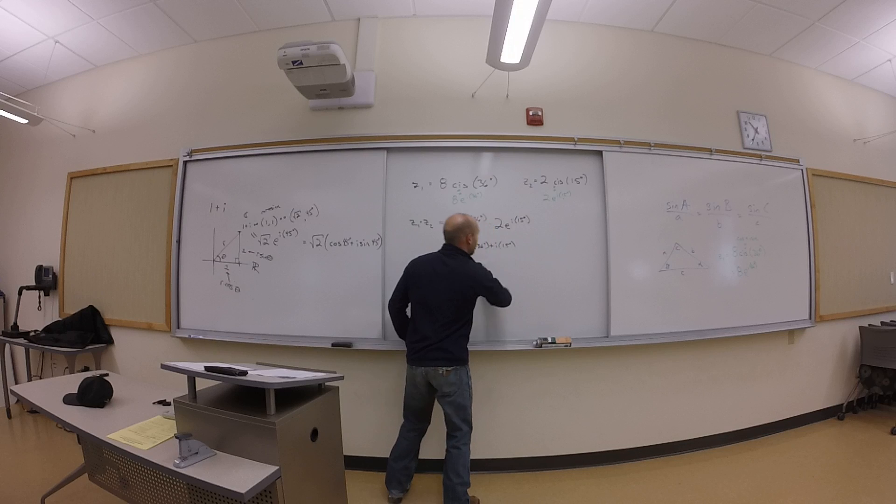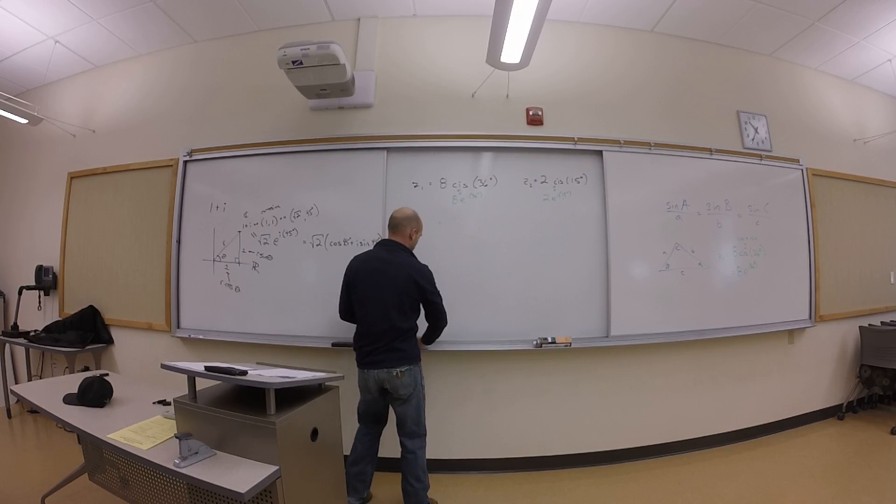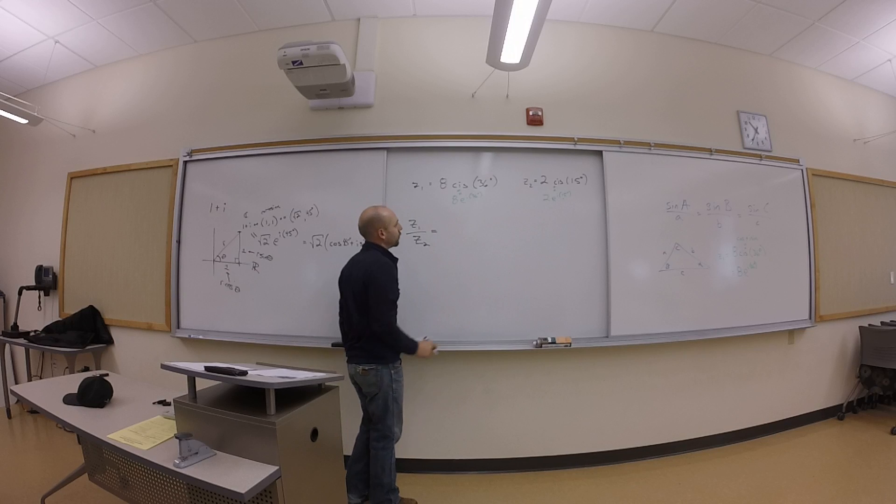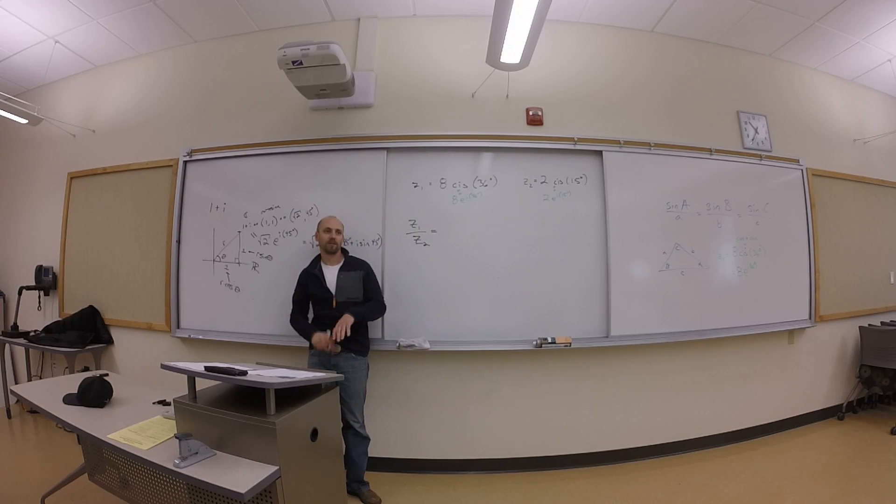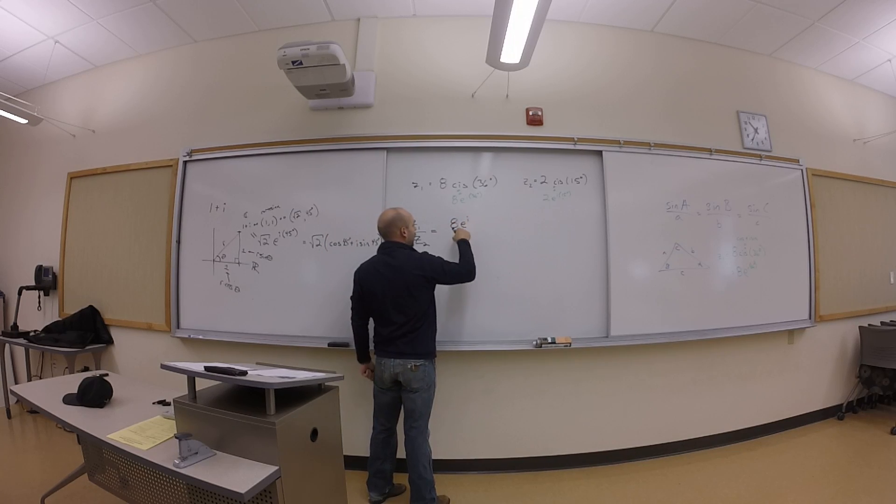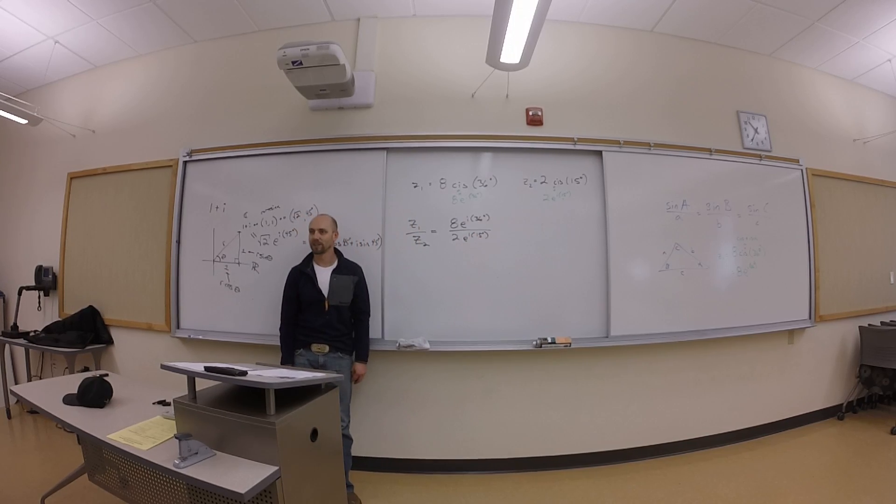So let's try the next one here, which is calculate the ratio. So I want to do z1 over z2. So how do you do z1 over z2? Okay, throw the things in here, right? Okay. So I got 8 e i 36 degrees over 2 e i 15 degrees, and then all you have to do is remember how division works.